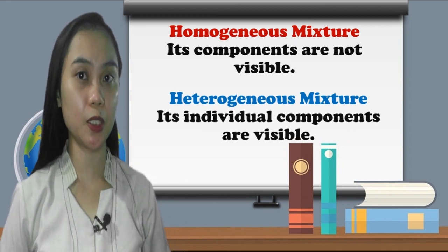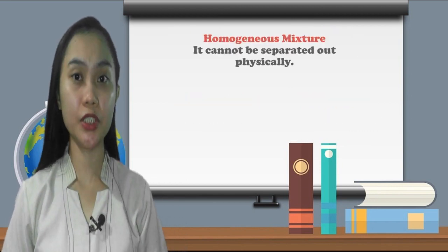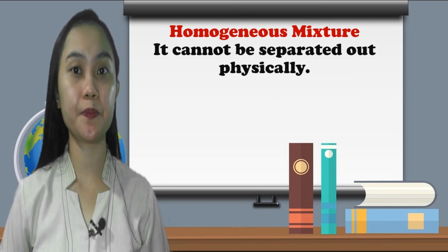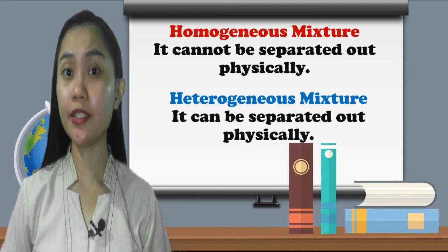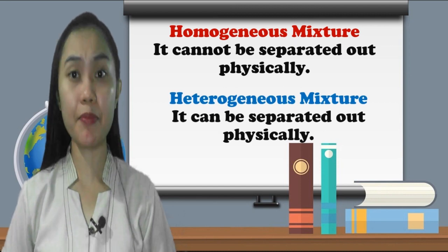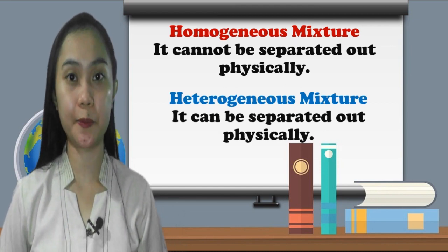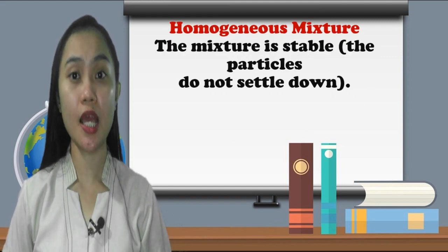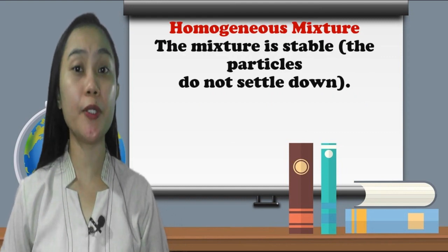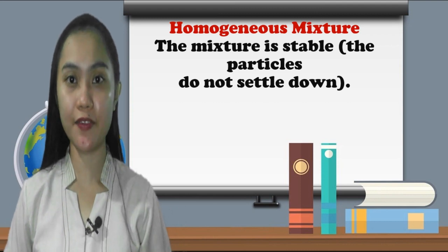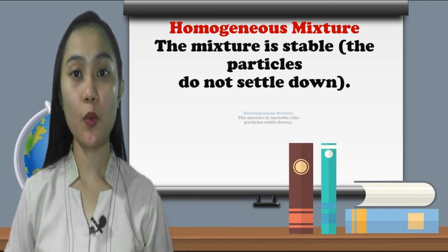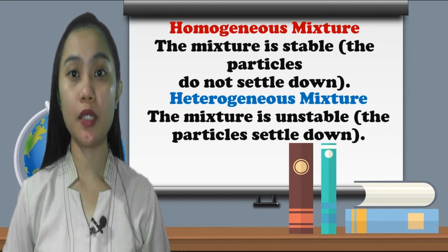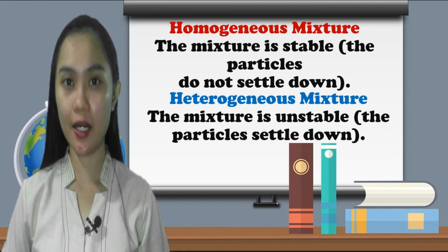In homogeneous mixtures, components cannot be separated out physically, while in heterogeneous mixtures they can be separated out physically. Homogeneous mixtures are stable and the particles do not settle down, while heterogeneous mixtures are unstable and the particles settle down.